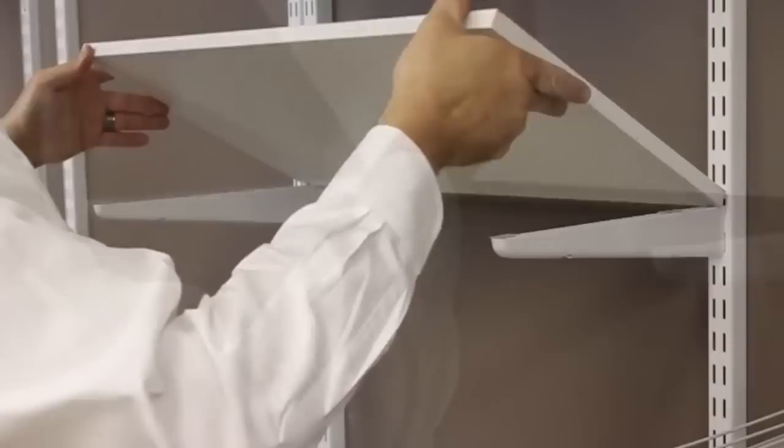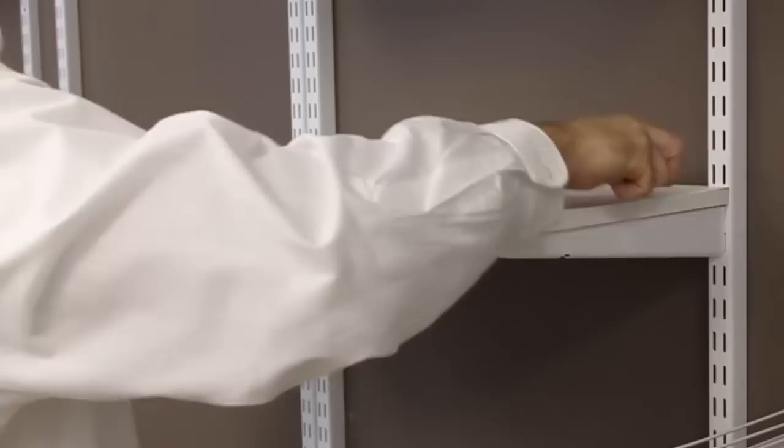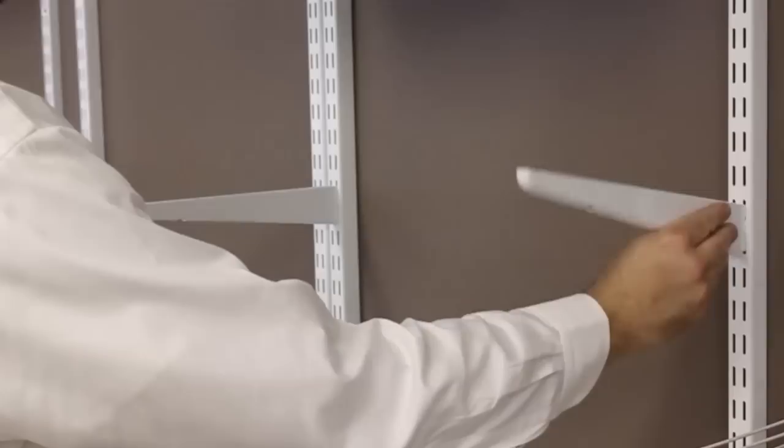To keep the shelves in place, use small plastic shelf locators. These attach the shelves to the brackets. Place two shelf locators into each bracket. Remove the double stick tape. Place the shelf on the bracket and press it to stick to the shelf locators.